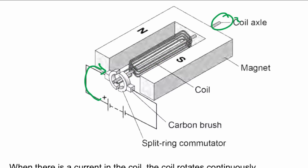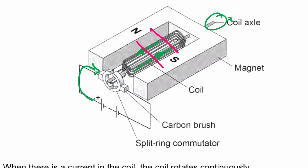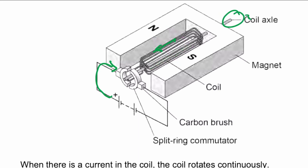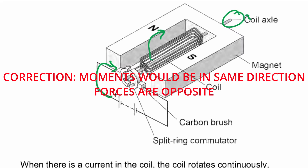Current flows through the coil. The sides of the coil that are parallel to the magnetic field experience a force. Because these two sides are connected to opposite halves of the commutator, the current through them flows in opposite directions. Using Fleming's left-hand rule, this means the forces on the two sides act in opposite directions, creating moments — one clockwise and one anti-clockwise — causing the coil to spin.